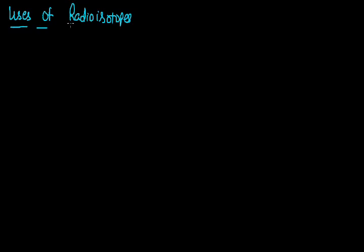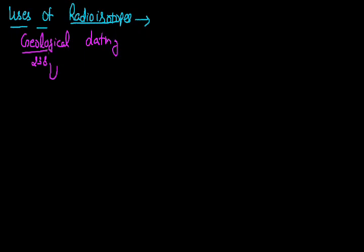Hello friends. Last time we dealt with some uses or applications of radioactivity, and the remaining uses we will be discussing in this lecture. So out of the remaining uses, the very first we are going to see is that radioisotopes or the phenomenon of radioactivity can be used to find out the age of rocks or the age of the Earth, done using the radioactive isotope of uranium, that is uranium-238. This process is termed as geological dating.